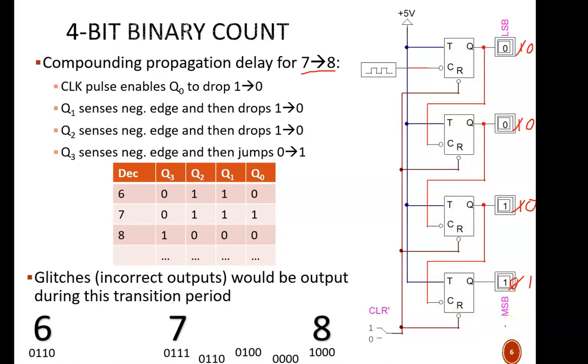This would be completely unnoticeable to human senses. For example, if we were using this counter to flash lights in a specific sequence, we would never see the glitches.